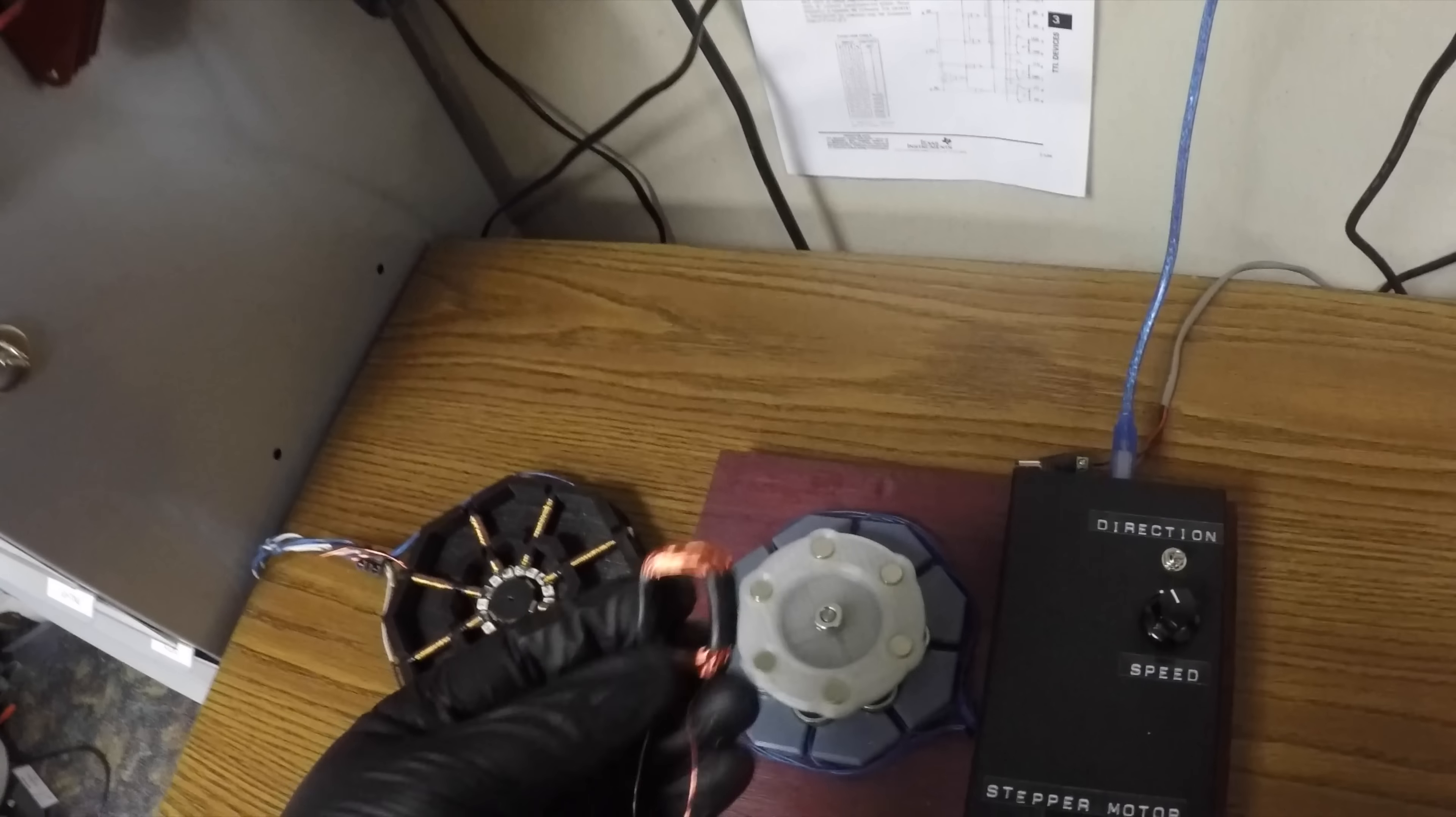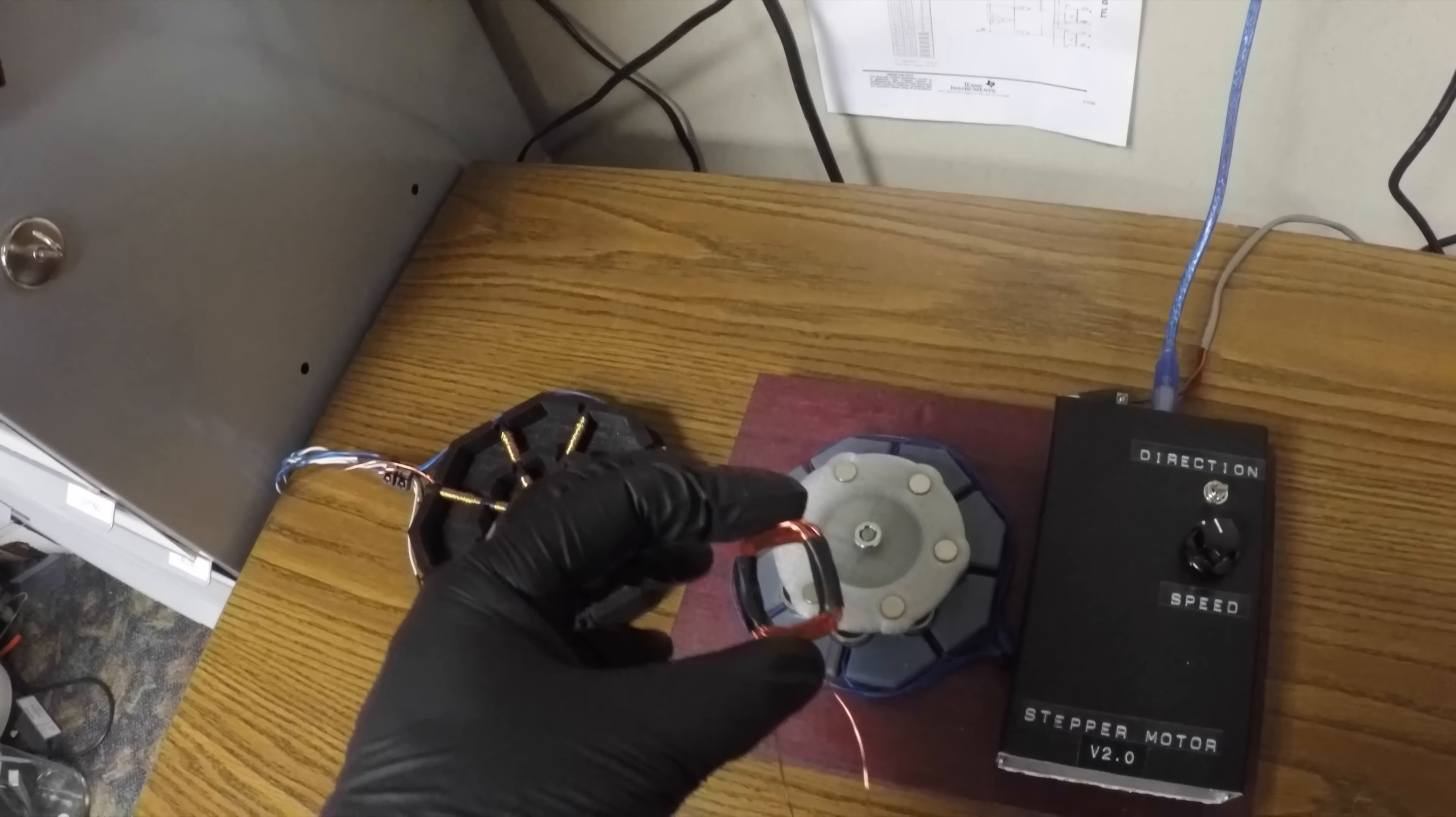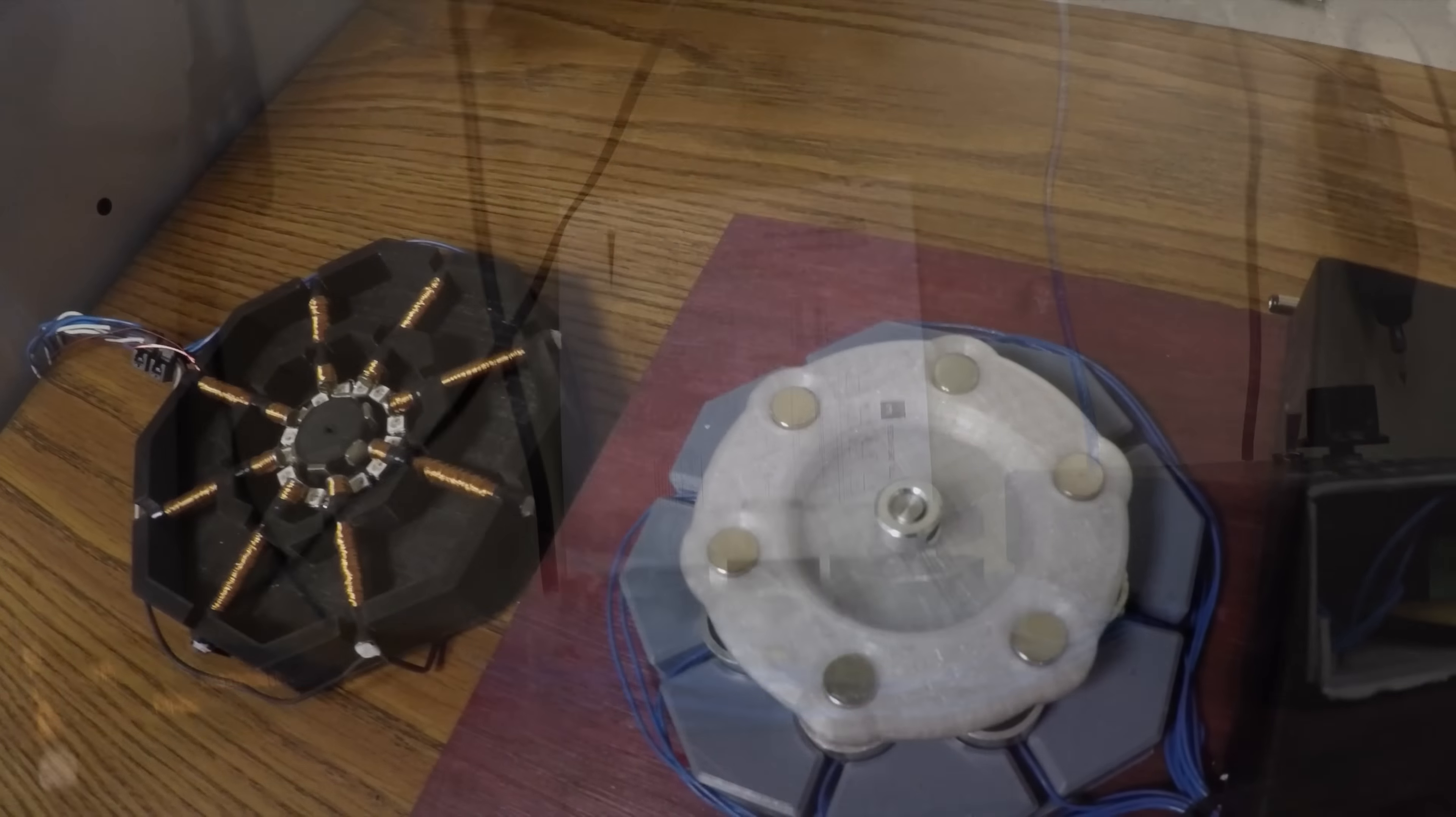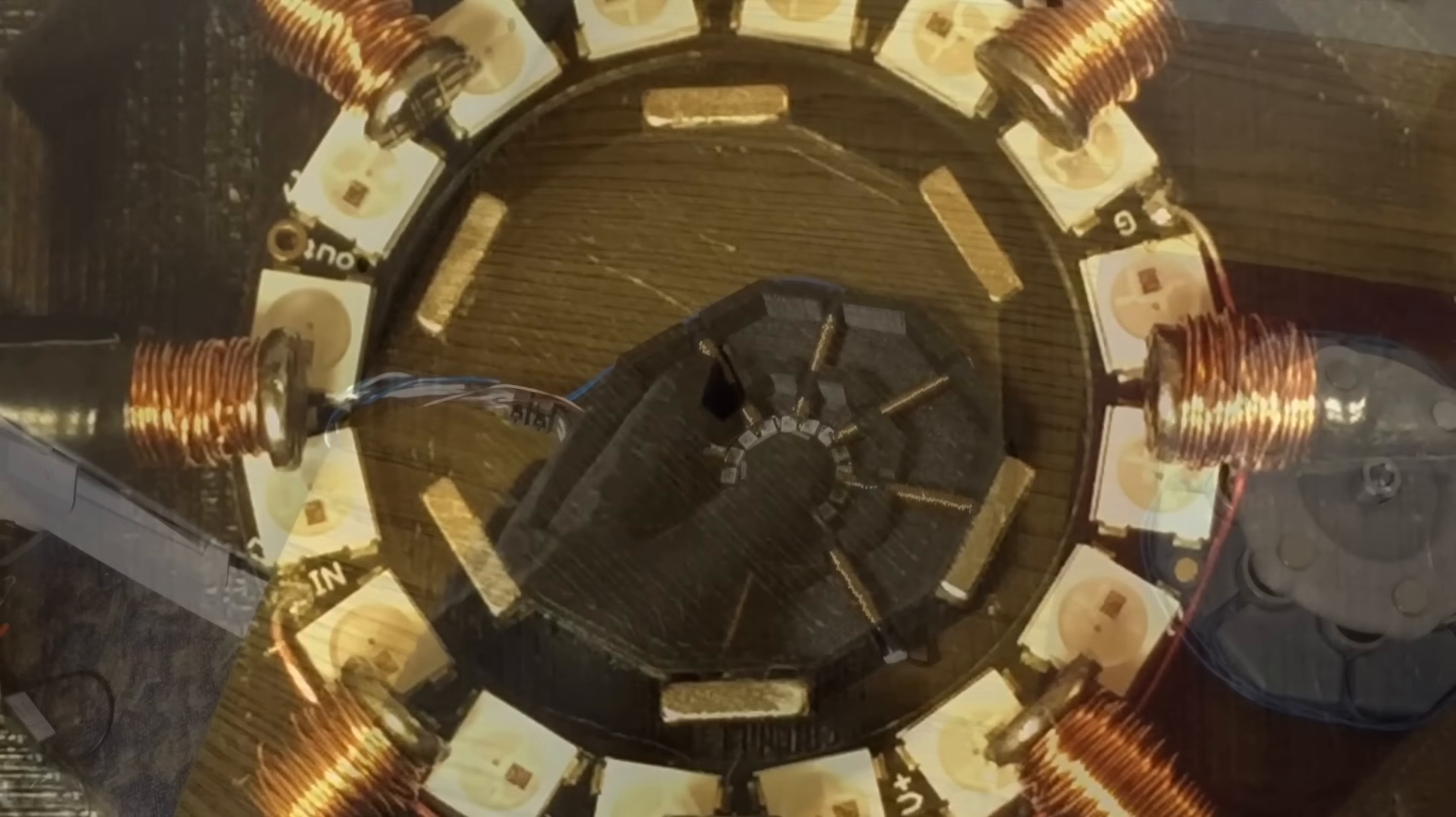This design would work much better if I had used air core electromagnets instead of the iron cores. There would be much less resistance when the motor steps and I could place the rotor much closer to the stator. I will also be adding a neopixel ring like the last version to show which of the coils are activated.